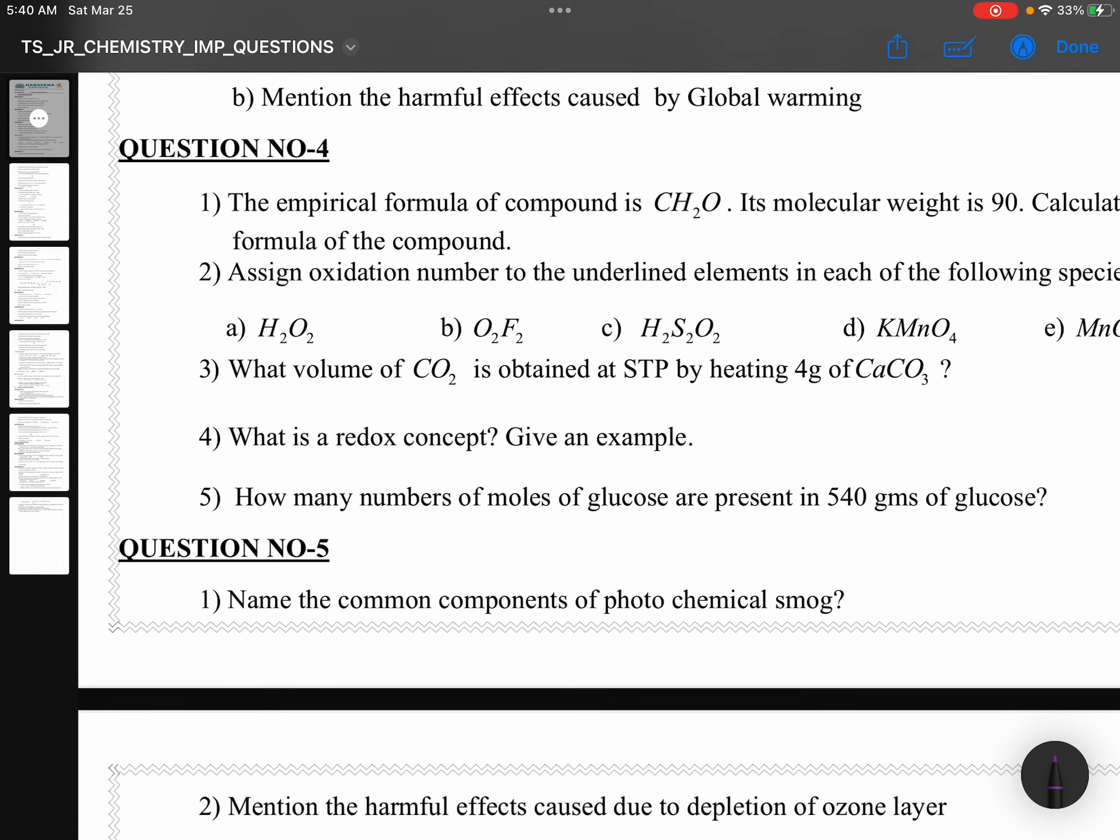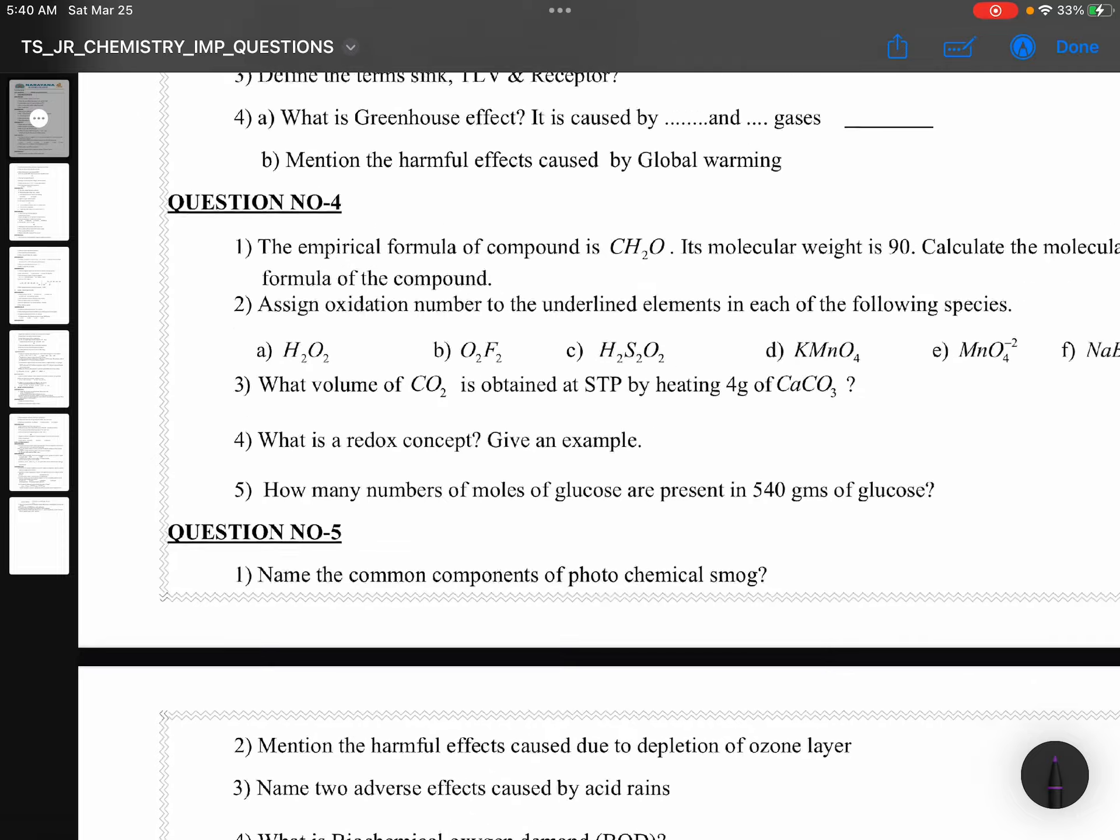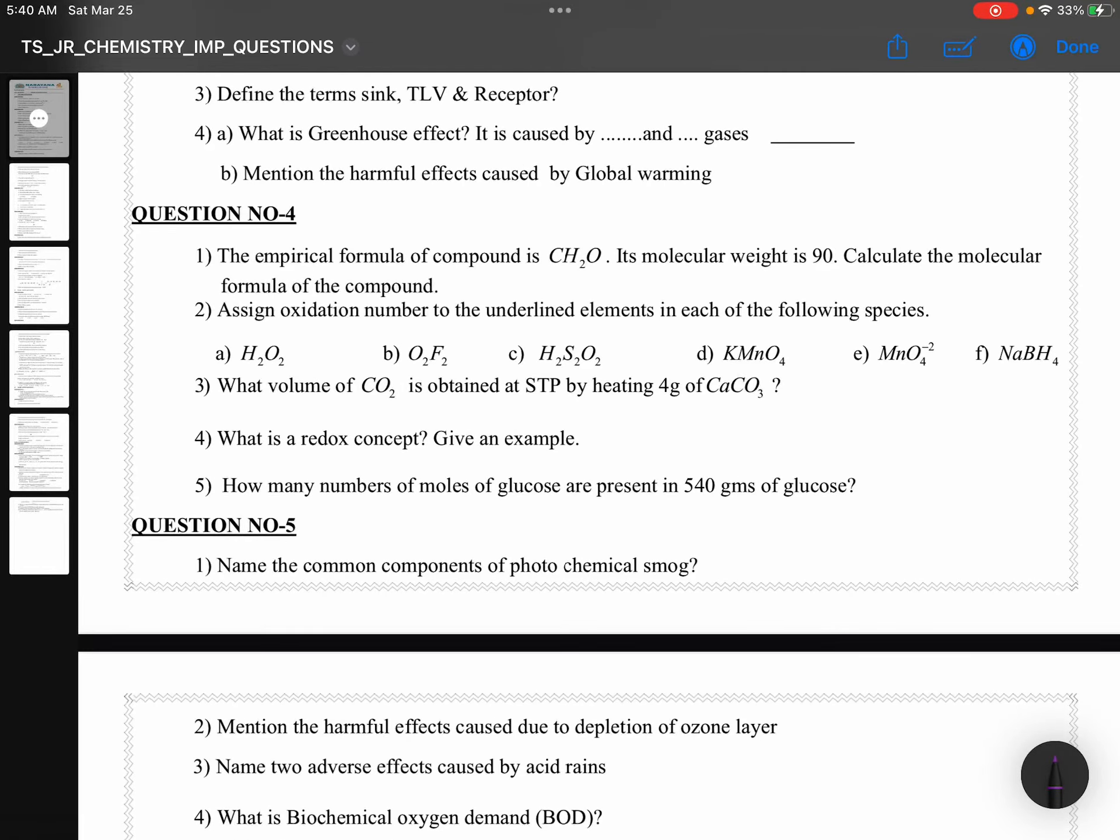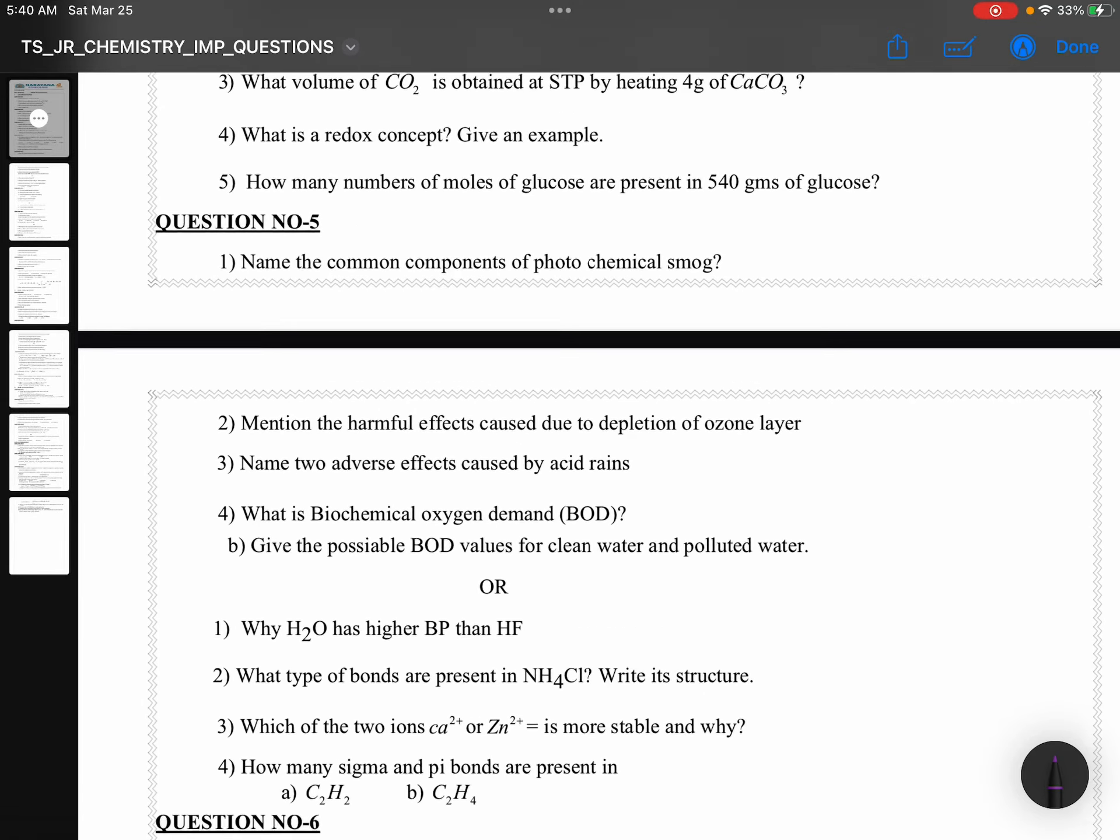Question number 4: Empirical formula, numerical and oxidation states H2O2. All these answers I will explain you in detail in short videos. Just this time we will see the questions only. What volume of CO2 is obtained at STP by heating 4 grams of CaCO3? What is a redox concept? How many number of moles of glucose are present in 540? So, stoichiometric questions these are.